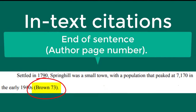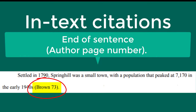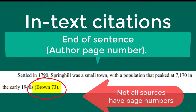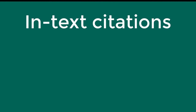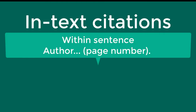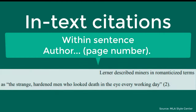If the source you are using does not have a page number, such as a website or video, then you do not need to include a page number. The second way to write your in-text citations is to include it within your sentence instead of at the end. In this case, you would include the author's name within the sentence and put the page number in parentheses at the end of the sentence before the period.